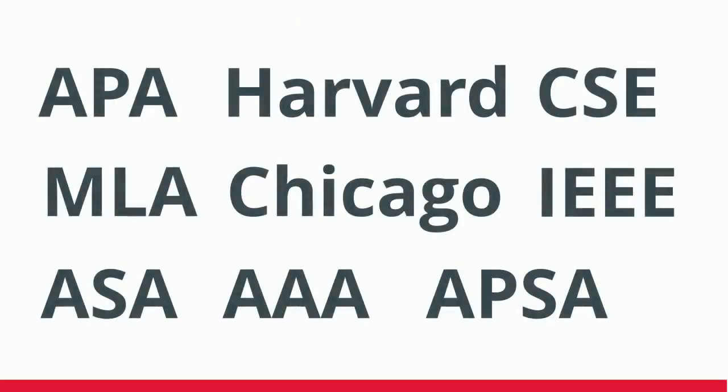There are lots of different citation styles, and they differ slightly based on discipline. For example, APA is used mainly in the social sciences, MLA is used in the humanities, Chicago is the preferred style for history scholars, and IEEE and CSE are examples of citation styles used in STEM.